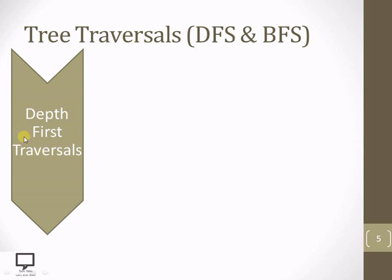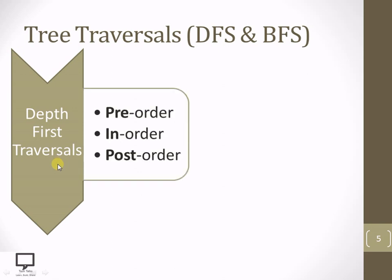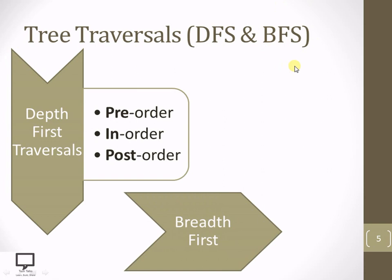In depth first traversal, it goes into the depth and has three subtypes: pre-order, in-order, and post-order. The meaning of pre-order, in-order, and post-order has already been explained in detail in my previous video on the introduction to tree traversal — a shortcut link is provided for reference. The other technique is breadth first traversal, which traverses according to level-wise order.